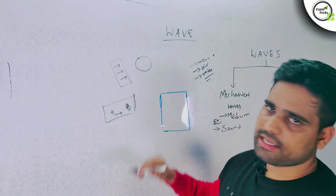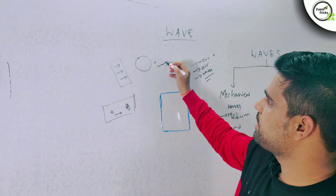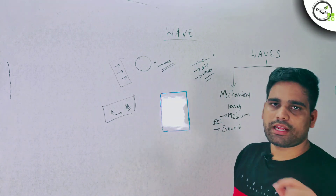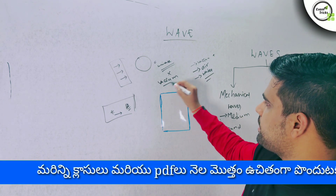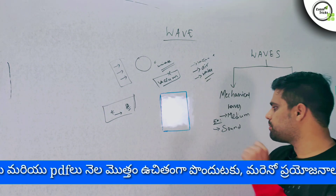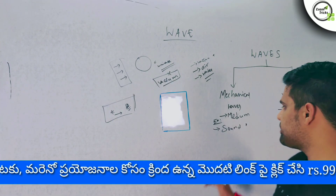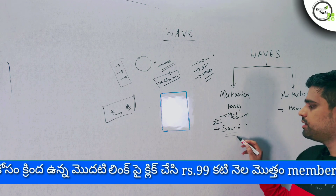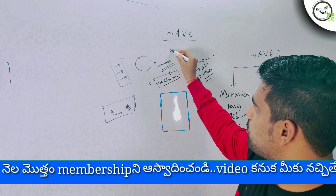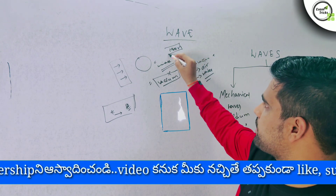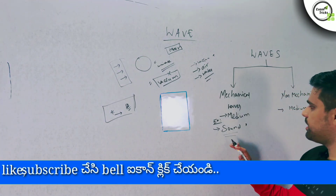That means if you are on the moon, in space, or in the universe — in a vacuum — there is no air or atmosphere, so there is no medium. Sound cannot travel in vacuum. This is a very important point for exams: sound does not travel in vacuum. Sound cannot travel on the moon because there is no medium.